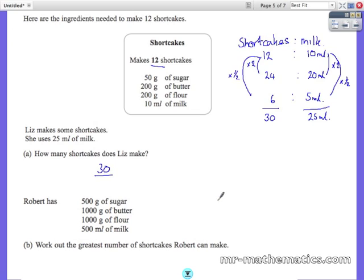Now in part B we have been given different amounts of each ingredient, so we will write it as a ratio of sugar to butter to flour to milk.